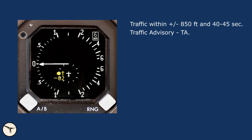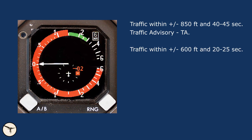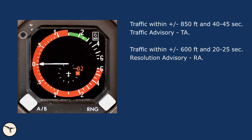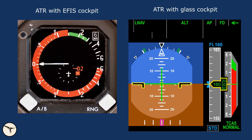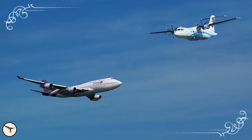If the aircraft comes within plus or minus 600 feet and 20 to 25 seconds from us, the symbol changes to a red square and a Resolution Advisory, called RA, is issued. The RA is an aural climb or descent command followed by a green arc on the VSI, showing the required vertical speed to clear the other aircraft. Red arcs show the vertical speeds to be avoided. The TCAS in the other aircraft communicates with the TCAS in our aircraft and will issue an opposite command.